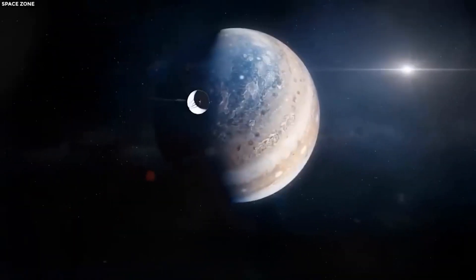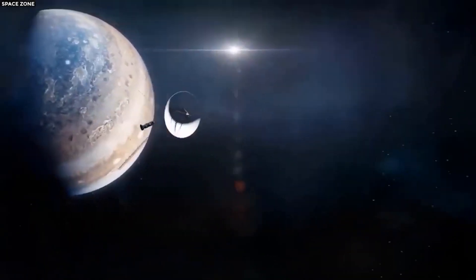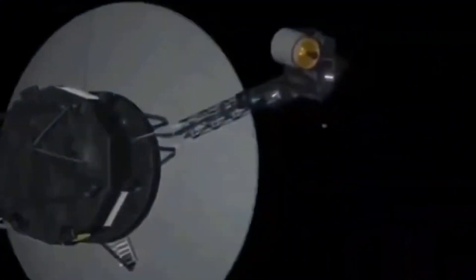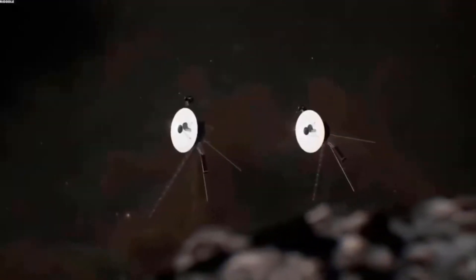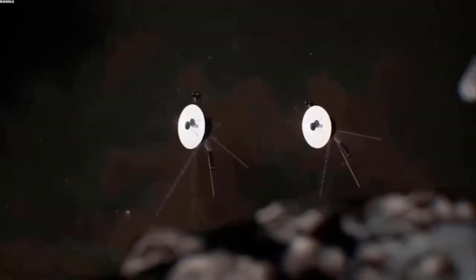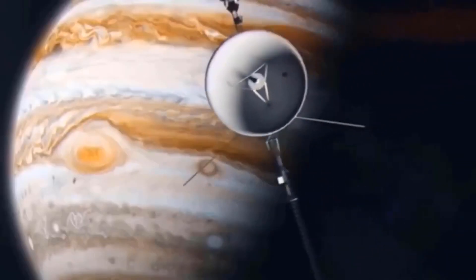The Voyager team infers this region is still inside our solar bubble because the direction of the magnetic field lines has not changed. The direction of these magnetic field lines is predicted to change when Voyager breaks through to interstellar space.